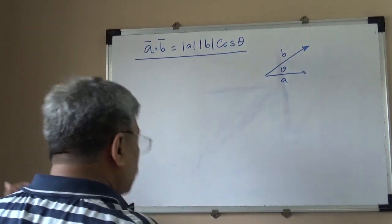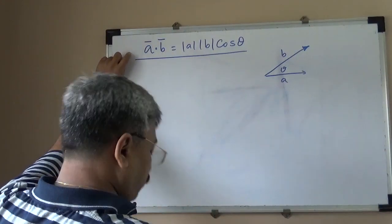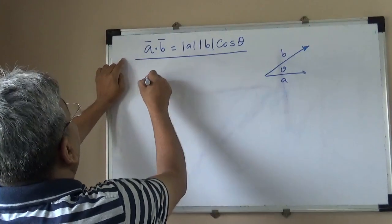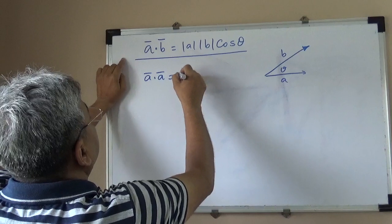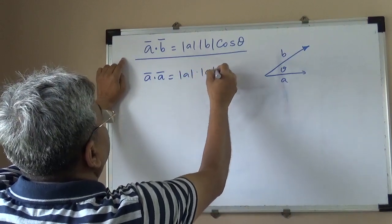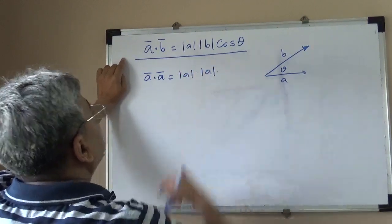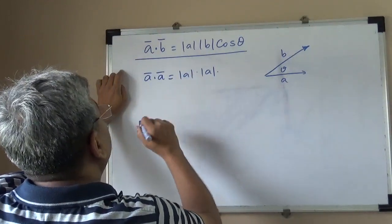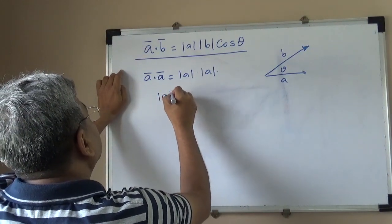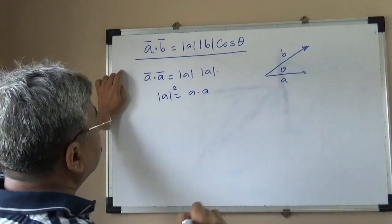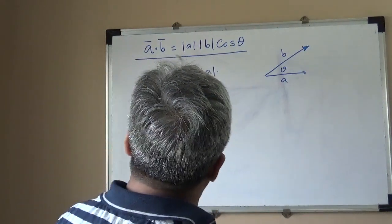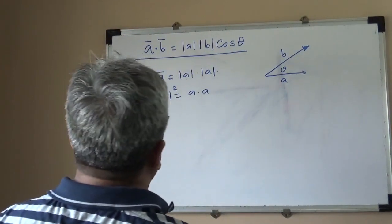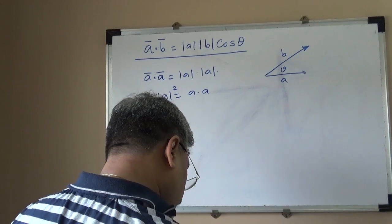Using this dot product definition, we can find the length of a vector very quickly. If we take the dot product of a vector with itself, it is |A| × |A| × cos θ, where θ is the angle between A and A, which is zero, and cos 0 is 1. Therefore, |A|² = A·A. That is how you find the length of a vector using dot product — a very good application of scalar product.